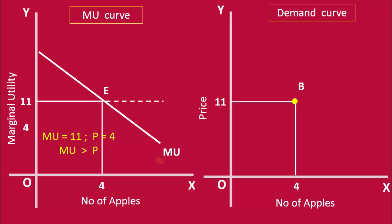The only option open to him is reducing his marginal utility. This he can do by consuming more. When he consumes the fifth apple, his marginal utility diminishes and becomes equal to the price. The consumer re-establishes his equilibrium at point F.